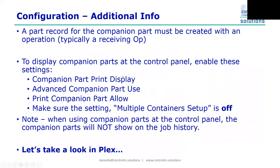Some additional information about the configuration within PLEX: you have to create a part record for your companion part with a process routing step, you'll have to enable that setup table called multi-out mode, and for the companion parts to work at the control panel you have to check four specific settings — making sure the first three settings are turned on and one particular setting is turned off. Also note that when creating companion parts at the control panel, the companion parts will not show on the history for that particular job.